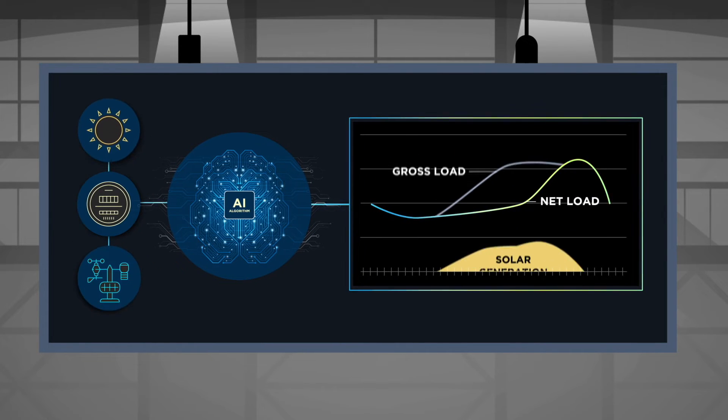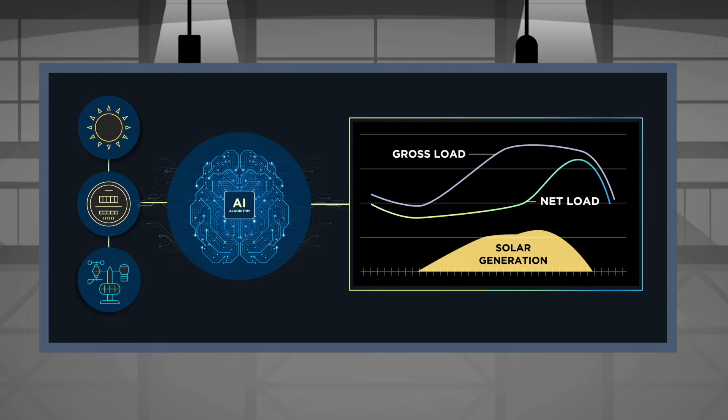The algorithm requires net meter, solar, and weather data to predict behind-the-meter solar generation and gross load, all of which are readily available to utilities.